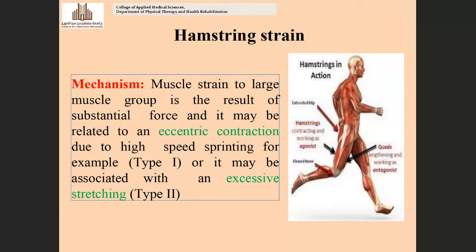The hamstring consists of three muscles: biceps femoris, semimembranosus, and semitendinosus. Generally the biceps femoris is most prone to hamstring strain. The muscle strain is a result of substantial force and may be related to eccentric contraction due to high-speed sprinting.